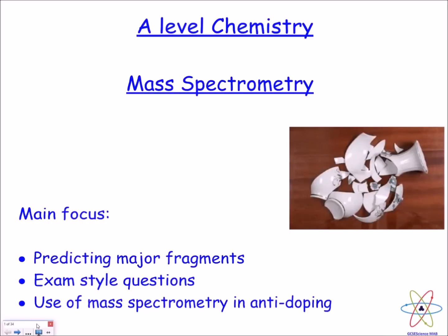Hello and welcome. This is a video on mass spectrometry for A-level chemistry. This video is going to be focusing on how to predict major fragments, especially for compounds containing the carbonyl group. We're also going to be going through two exam-style questions, and we're going to be ending off with how mass spectrometry is used in anti-doping labs.